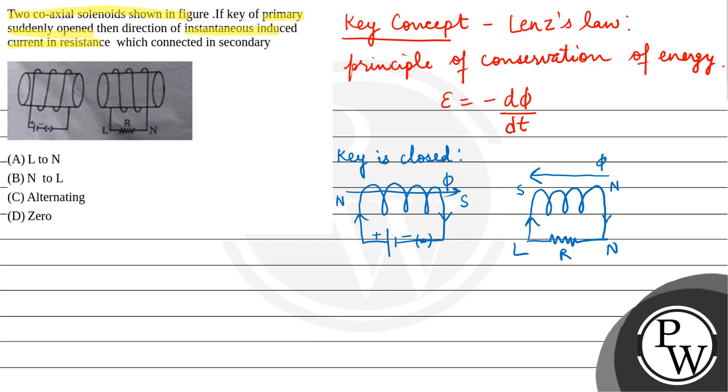Because if you see from this side, you will get anti-clockwise current. So in this scenario, the flux change is being opposed. Now in the second case, your flux is decreasing because we have opened the key.